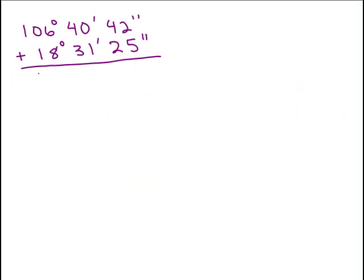So again, we'll start out just by adding the degrees together, the minutes, and the seconds together. So this is 124 degrees, 71 minutes and 67 seconds.